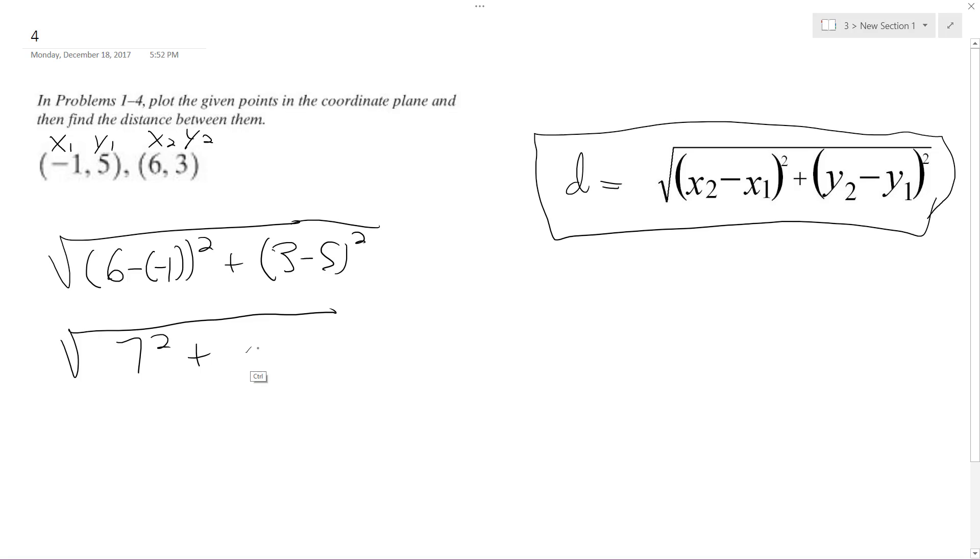Well, negative 2 squared, so I end up with 49 plus 4 which is equal to the square root of 53.